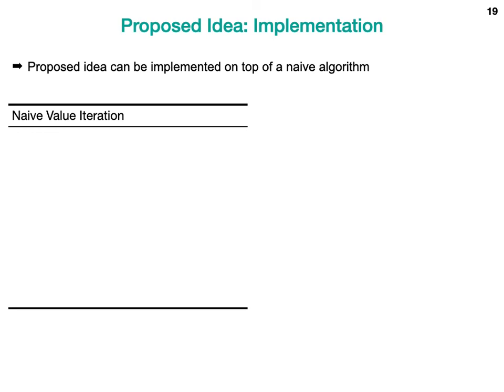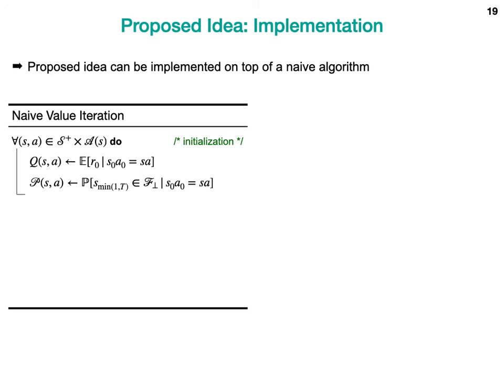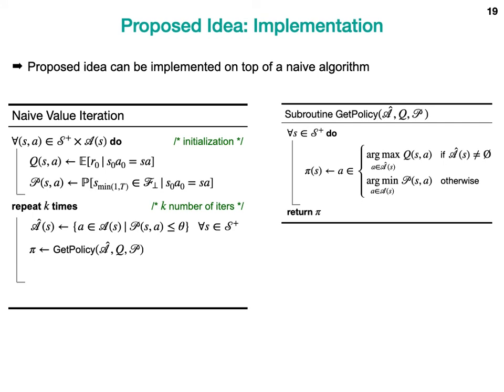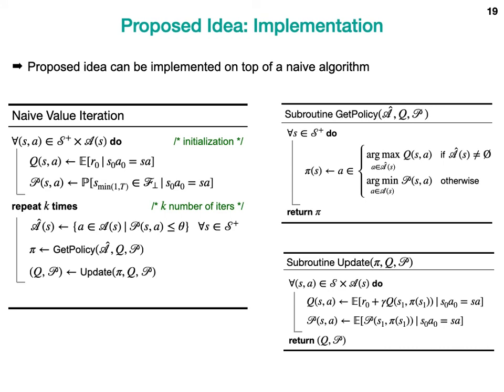We consider naive value iteration, which first initializes the P and Q arrays using the MDP, then runs K iterations where we find the estimated set of all safe actions for each state, and obtain the next policy from those constrained action sets and Q and P arrays. The subroutine constructs the policy the same way as the policy iteration operator. Naive value iteration then updates P and Q arrays using rules derived from the Bellman equations, returning them as estimates of the Q function and probabilistic reachability. In the proposed version, the constraints are now recursive with respect to policy Pi.